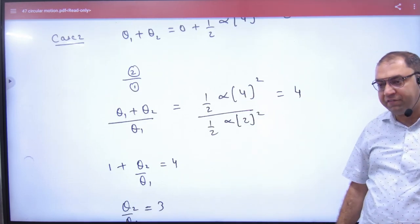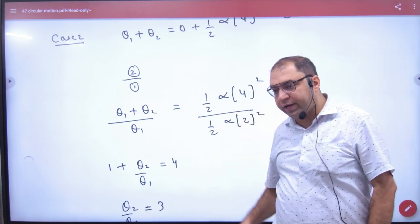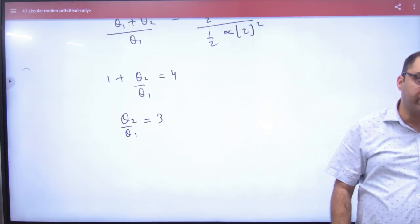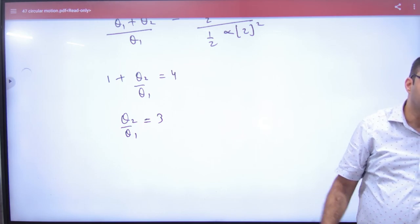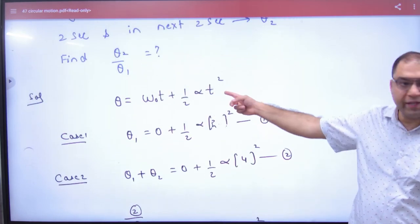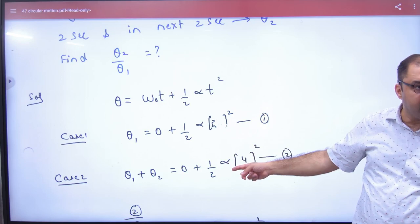Alpha, alpha, half, half cancel. So, you have this ratio. So, what will we do here? Theta2 by theta1. What will we do here? Three. So, these two equations are clear. Two equations are clear.